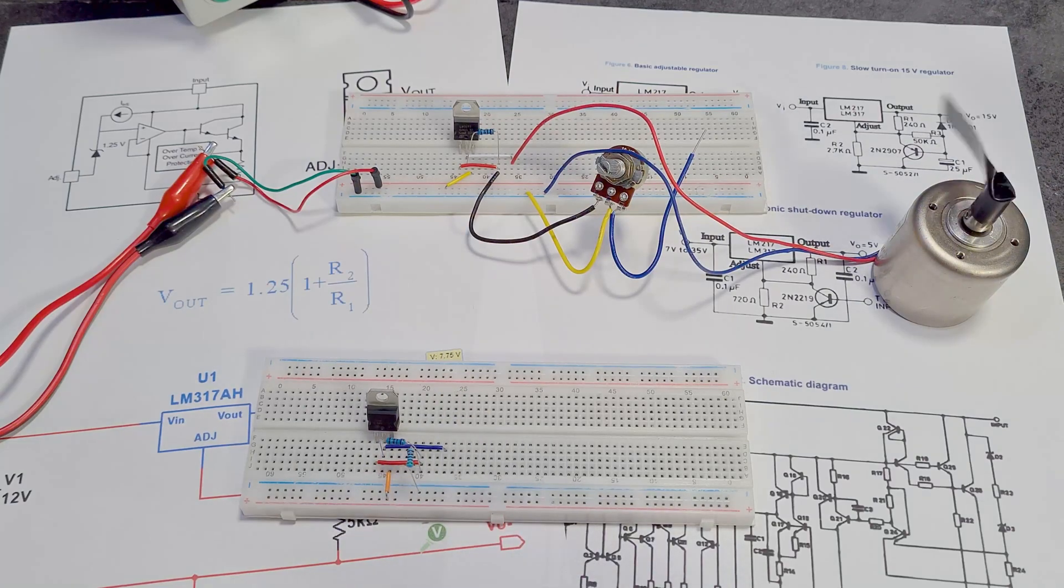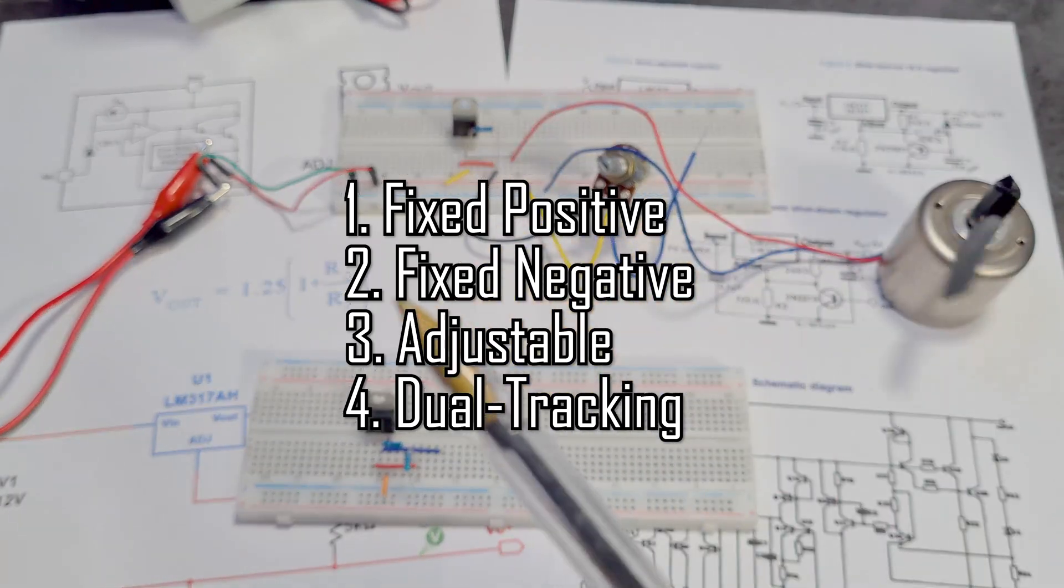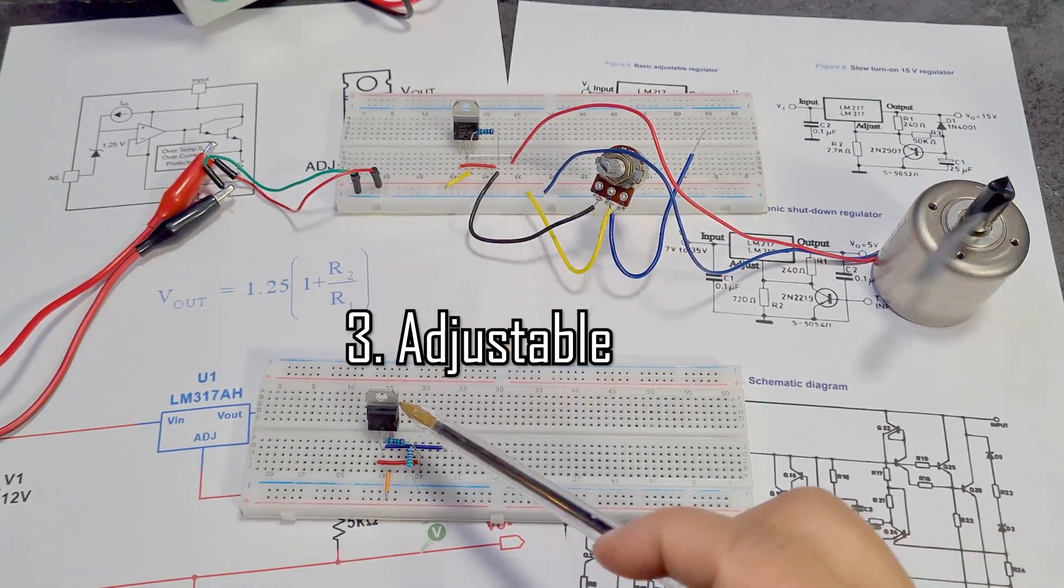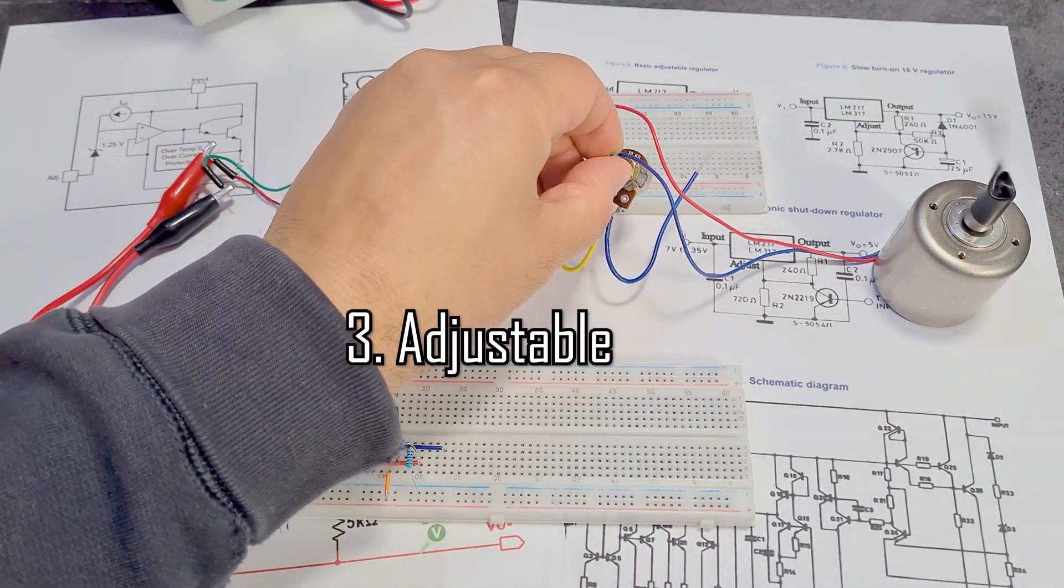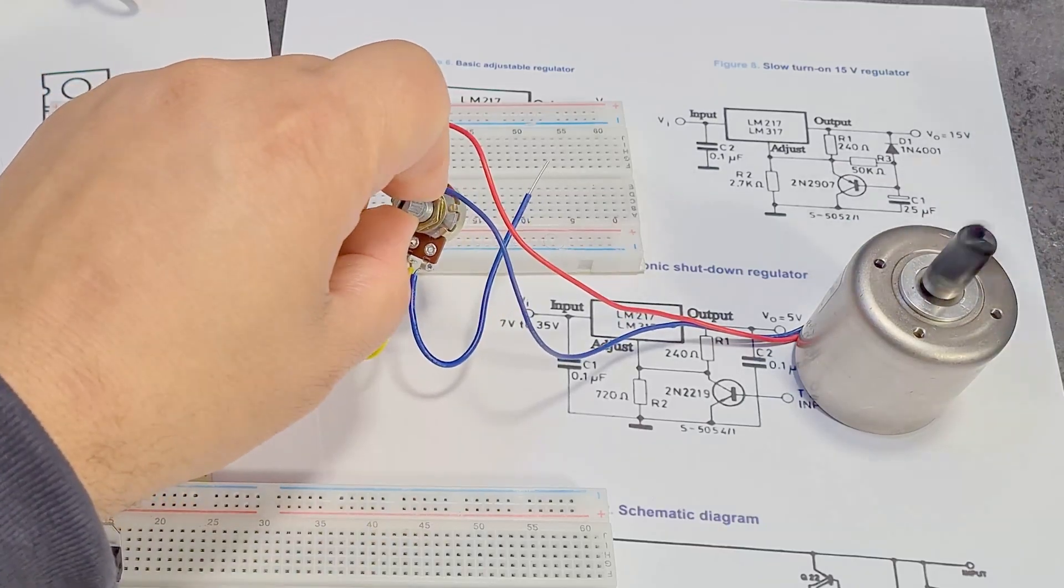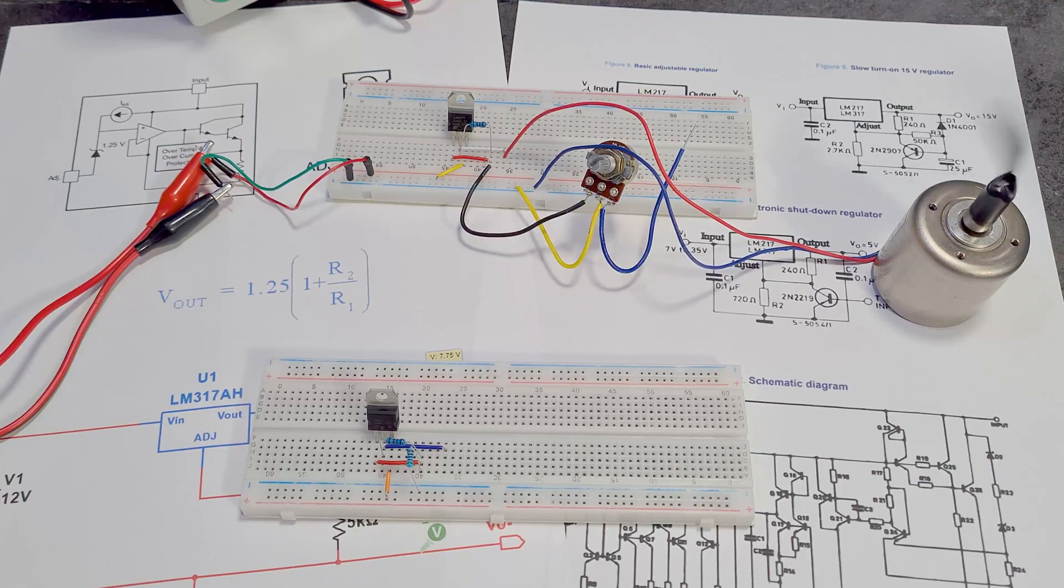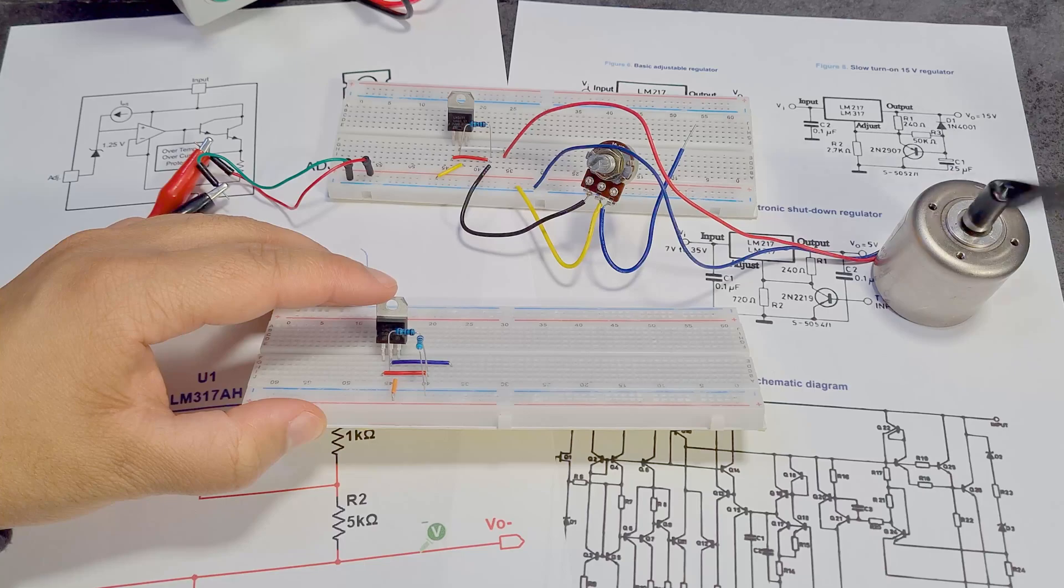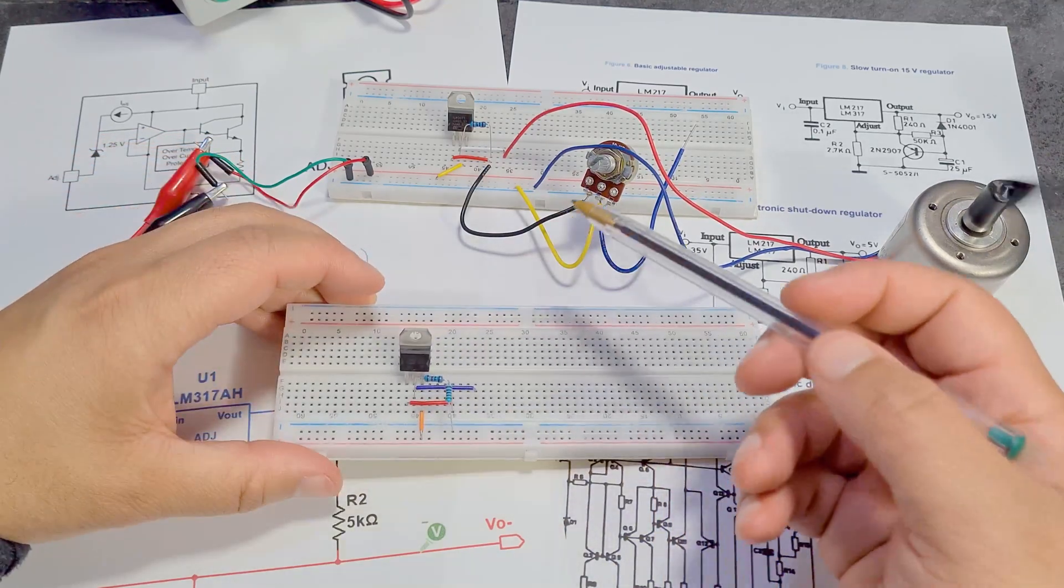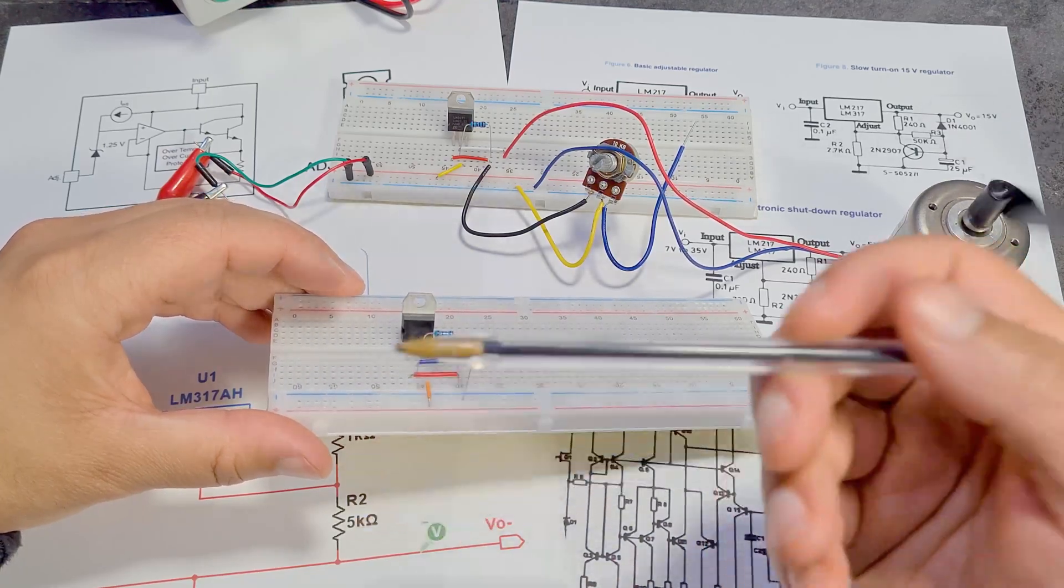Okay, so if you remember from my introduction video there are four different types of ICs. We've got fixed positive, fixed negative, adjustable, and dual tracking. So if you don't know what that is, check my video two videos ago. Check that out, watch that video, it's a good video if I do say so myself.